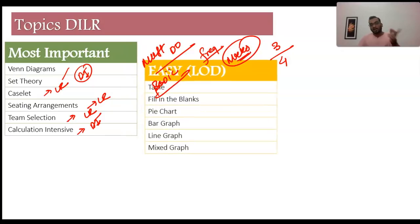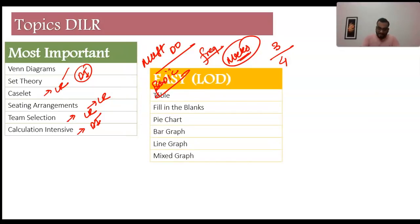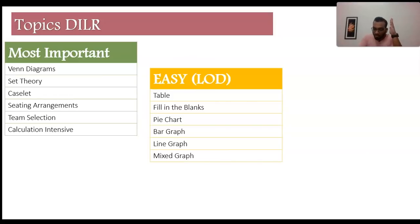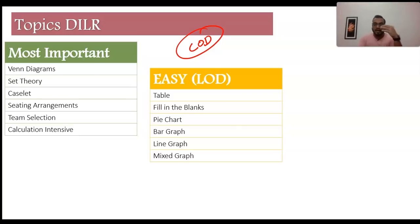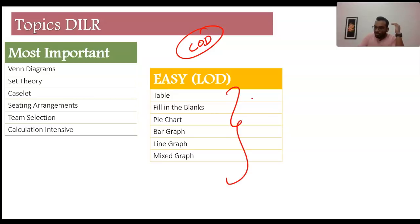Then I have another bracket which I gauge on the LOD — the level of difficulty — where topics are easy and doable. These include table, fill-in-the-blanks, pie chart, bar graph, line graph, and mix graph. These are short, easy, doable topics. There is no doubt about it because bar graph, line graph, mix graph, pie chart, table — these are all calculation-friendly formats.